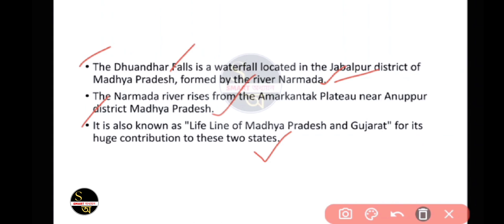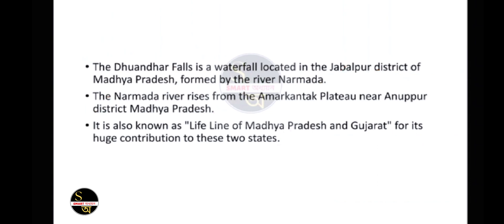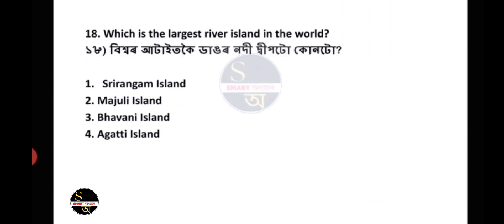Question number 18: Which is the largest river island in the world? The answer is Majuli island.